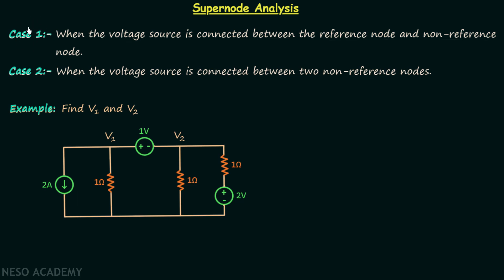We are done with case number one, in which we performed nodal analysis when the voltage source was connected between the reference node and the non-reference node. Now in this lecture we are going to discuss case number two, in which we will perform nodal analysis when the voltage source is connected between two non-reference nodes. This particular case is known as super node analysis, and we will try to understand how to perform super node analysis by the help of this example.